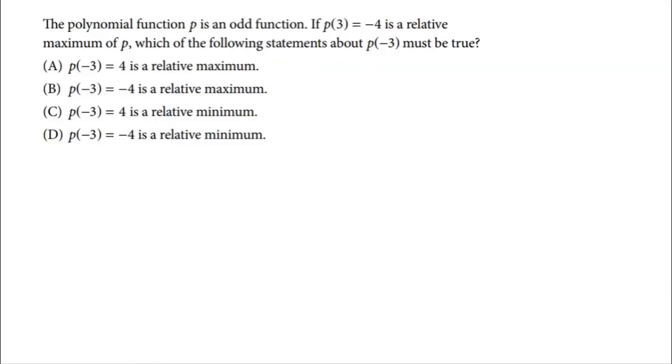This next question says the polynomial function p is an odd function. If p(3) = -4 is a relative maximum of p, which of the following statements about p(-3) must be true? A couple things I've got to remember about what an odd function means. An odd function means that if I plug a negative value into a function, I get the opposite of if I plug the positive value. So if p(3) = -4, then when I plug in the opposite of 3, which is negative 3, I need to get the opposite result, which is positive 4.